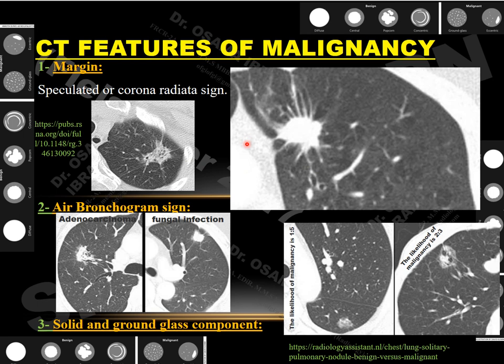The second feature is the air bronchogram. The presence of linear and dot-like lucencies within solid nodules raises the possibility of malignancy — this one was adenocarcinoma — compared to solid nodules without air bronchogram, which was a fungal infection. Also, the presence of both solid and ground glass components within a nodule raises the possibility of malignancy, particularly when there are solid components alongside cystic and ground glass components in a sub-pleural location with irregular outlines.